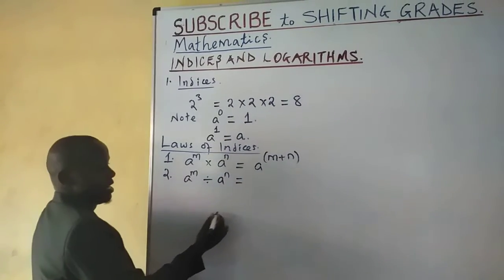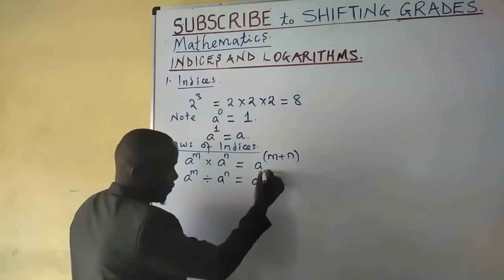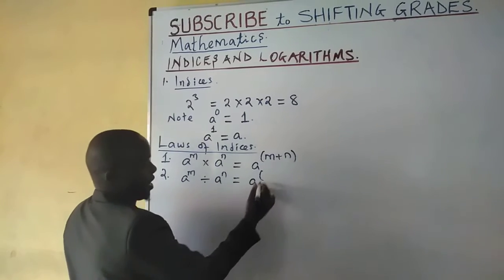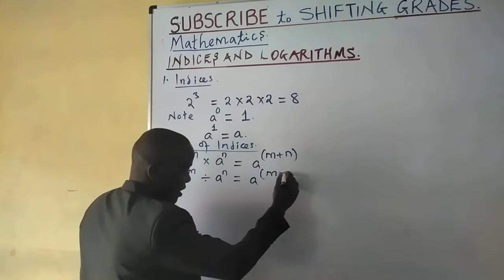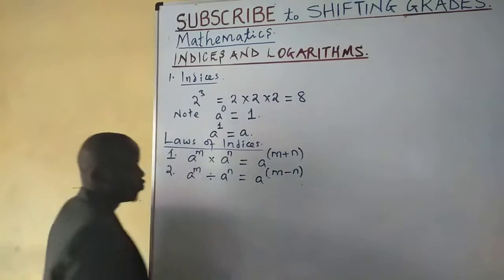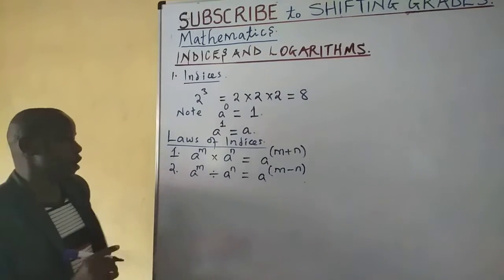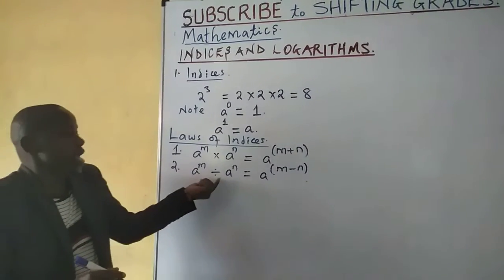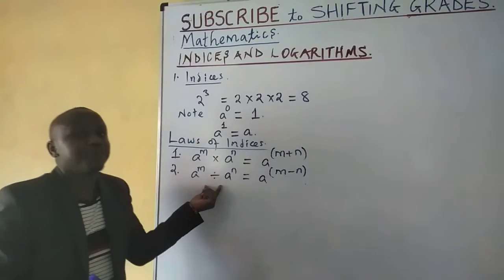We also say that when you have a number a raised to m divided by a raised to n, the result is a raised to the difference between the two indices. When dividing, we take the same base but subtract the indices.